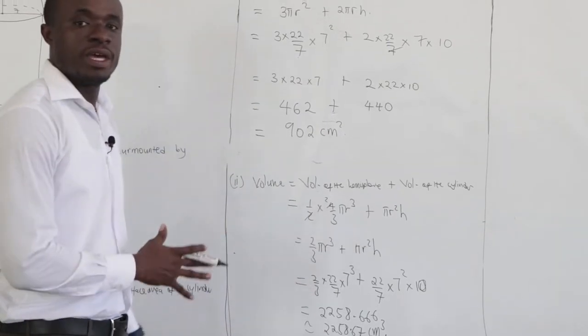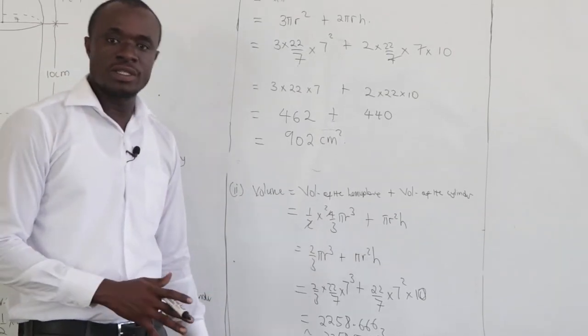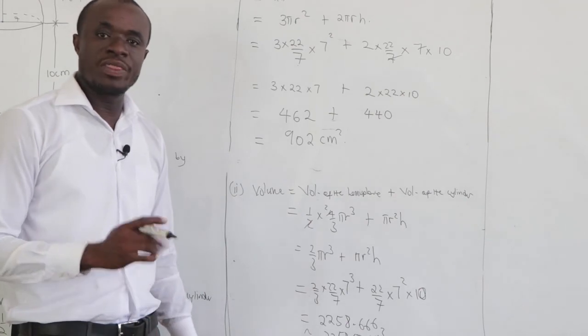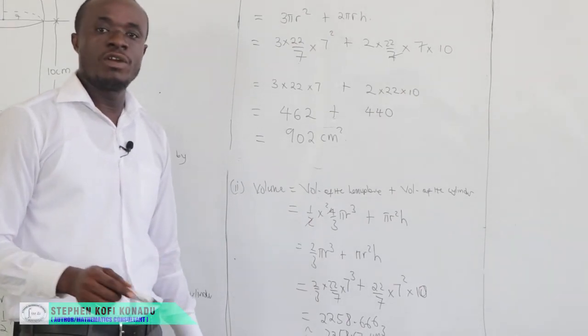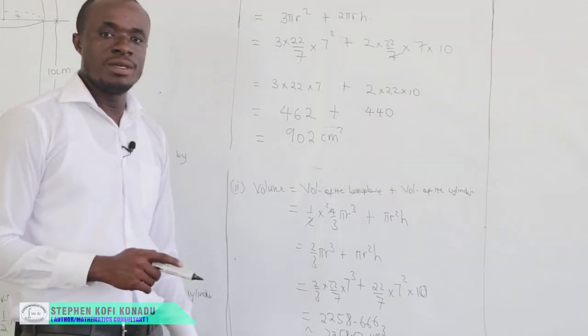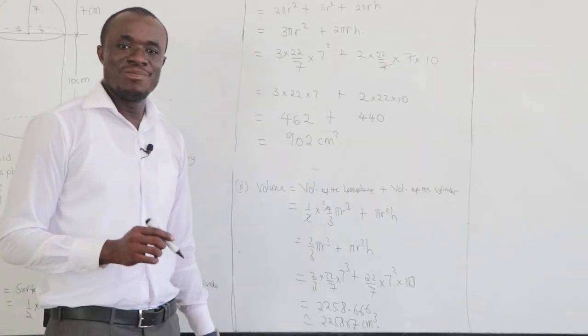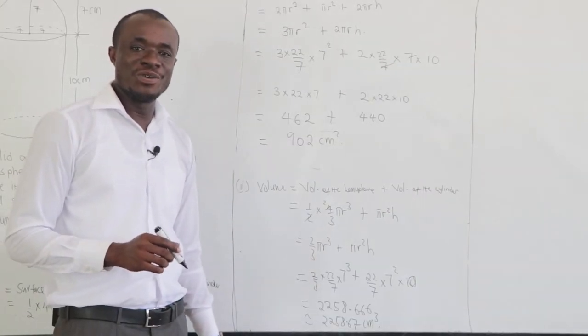Volume, that is the volume of the hemisphere plus volume of the cylinder. The hemisphere is 2 over 3 pi r cube. The volume of the cylinder is pi r squared h. Thanks a lot for watching. Make sure that you subscribe for more videos.